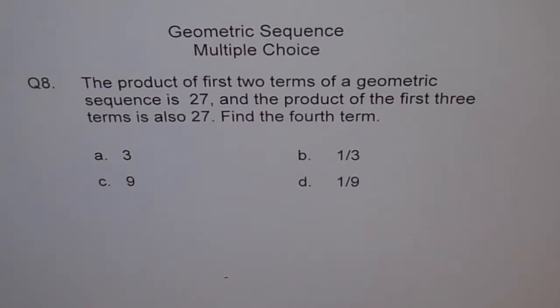Here is a very interesting multiple choice question. Question 8. The product of first two terms of a geometric sequence is 27, and the product of the first three terms is also 27. Find the fourth term. Okay, let's try to do it.